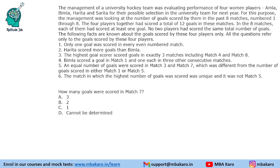Hello everyone, welcome to Aptitude Jab. This set from CAT 2022, Slot 1 DILR, says that the management of a university hockey team was evaluating performance of four women players — Amla, Bimla, Harita and Sarita — for their possible selection in the university team. For this purpose, they were looking at the number of goals scored by them in the past 8 matches.